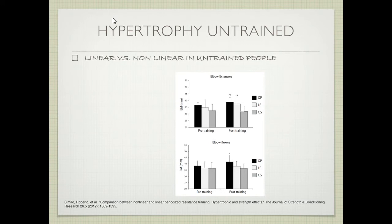Now let's talk about the impact of linear versus nonlinear on hypertrophy. Unfortunately, to date all of that data is mostly in untrained people. Looking at the Simeo study comparing linear versus nonlinear in untrained people, examining elbow flexors and extensors: muscle thickness went up in the nonlinear group (OP) for the elbow flexors, but did not go up in the linear group (LP) compared to control. So nonlinear periodization seems beneficial for hypertrophy programming, at least in untrained people.